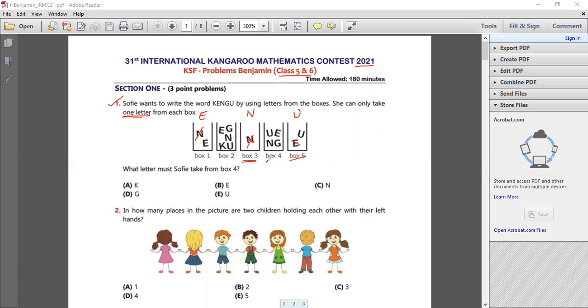Okay, and if you see from box number four, U is already taken, E is already taken. And we have N and G. N is also taken. So the only alphabet left to be taken from box number four is G. So my answer is G. Thank you.